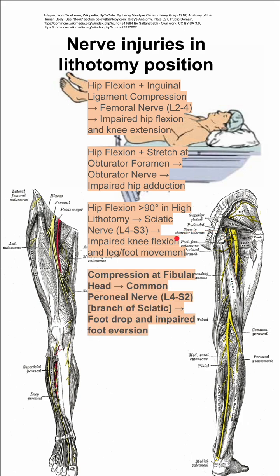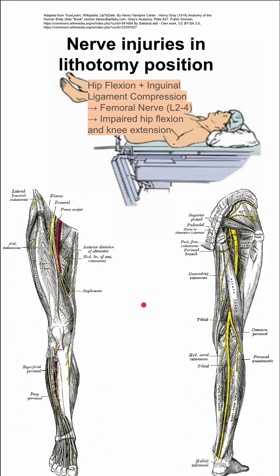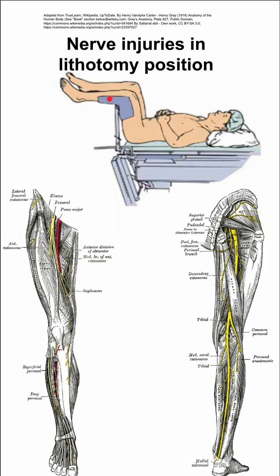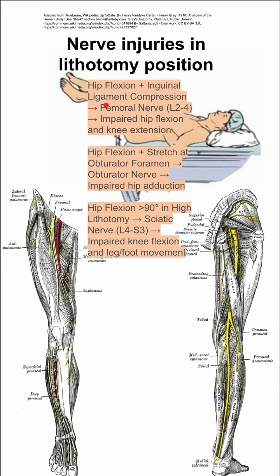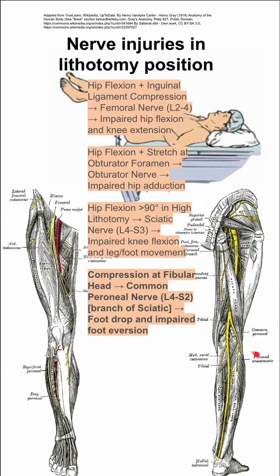The more common nerve injury in the lithotomy position is compression at the fibular head leading to a common peroneal nerve injury. If you have pressure on the lateral side of the leg, that can lead to a common peroneal nerve injury. The common peroneal nerve is a branch of the sciatic nerve and comes very superficial around this area. Compression there can result in foot drop and impaired foot eversion.